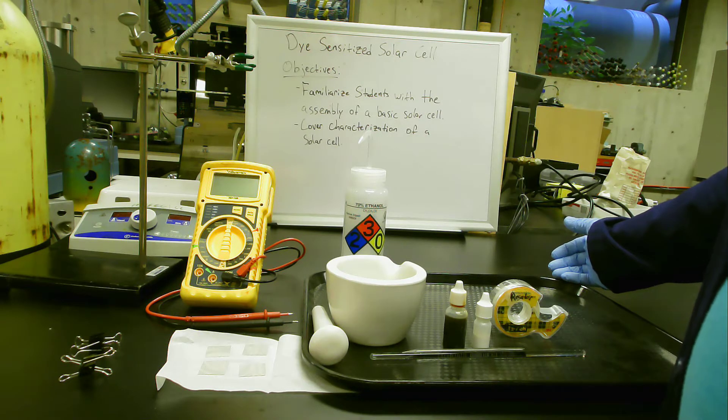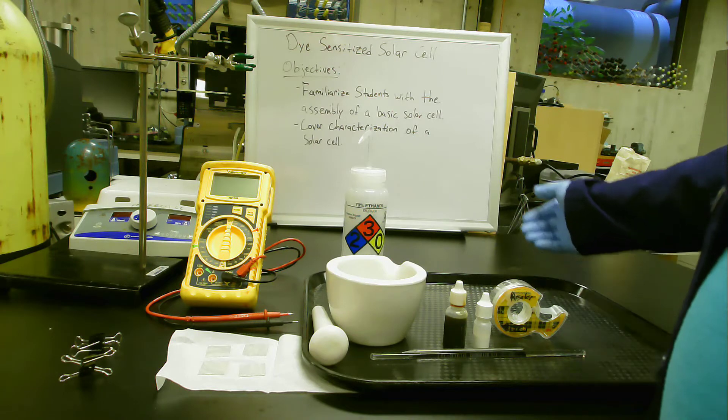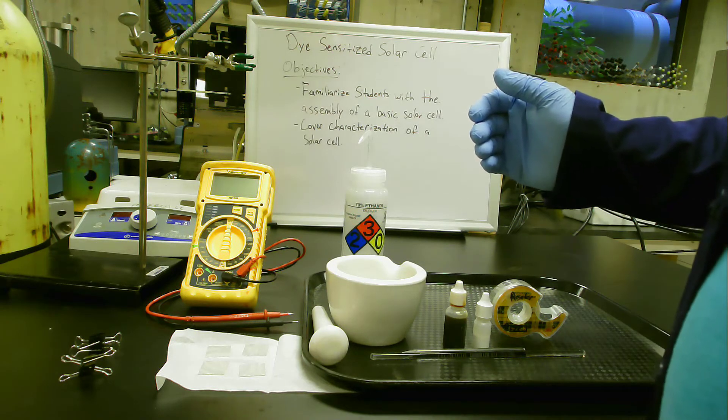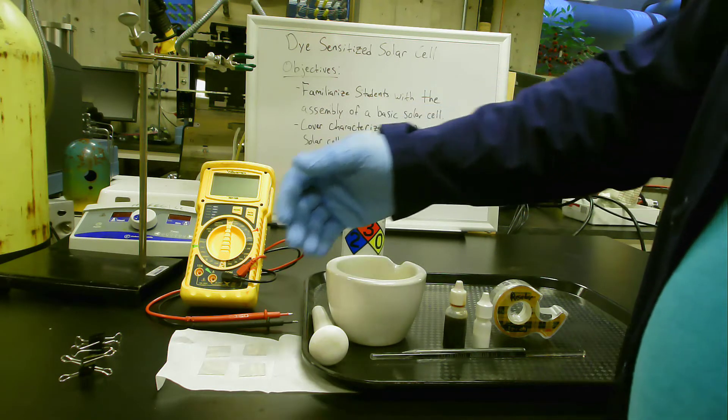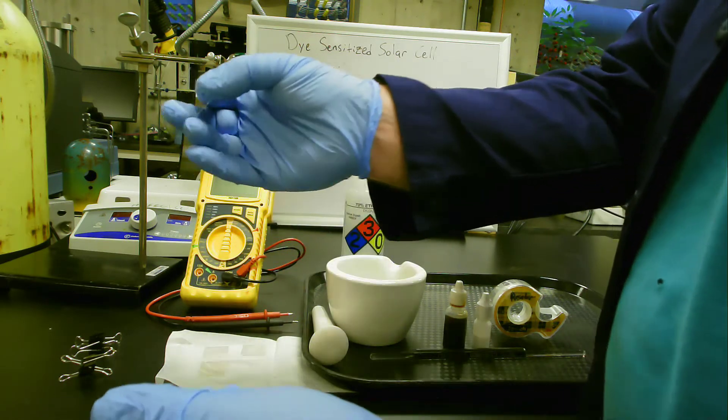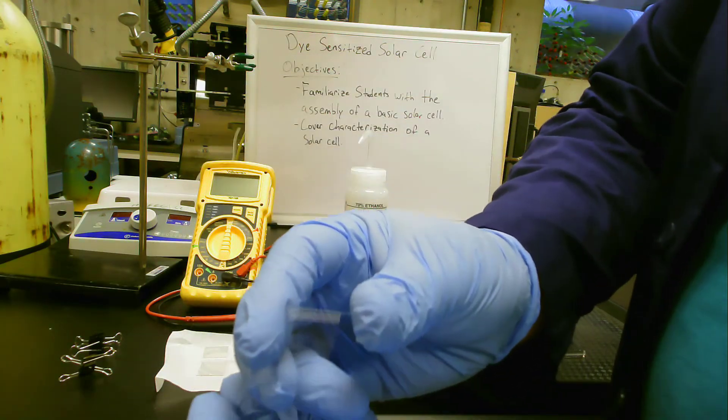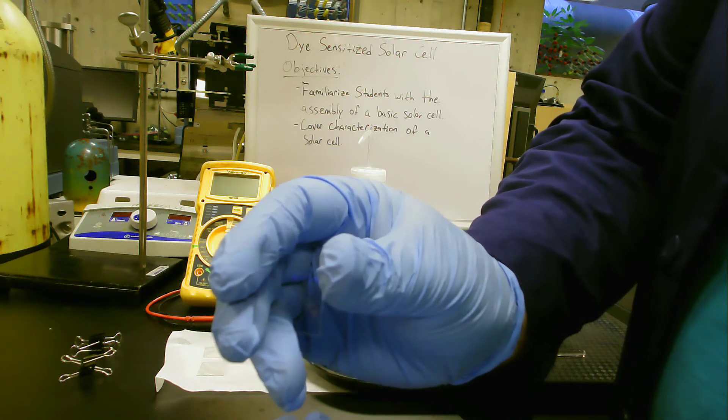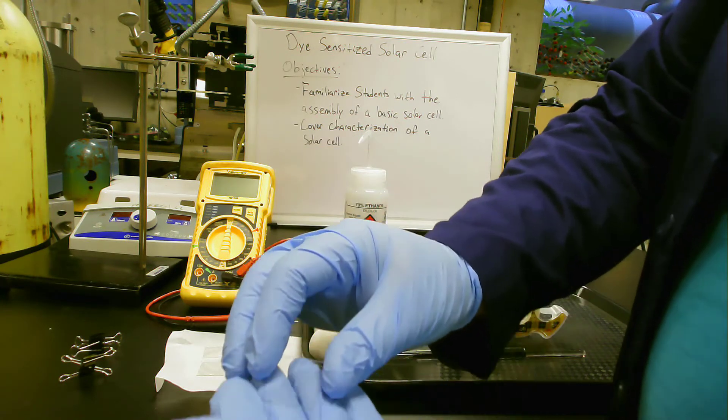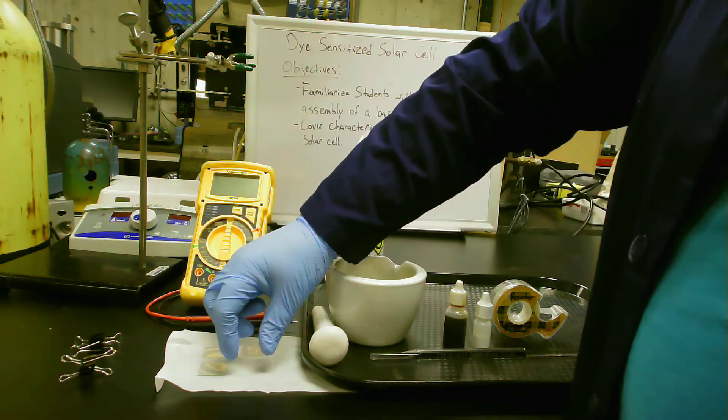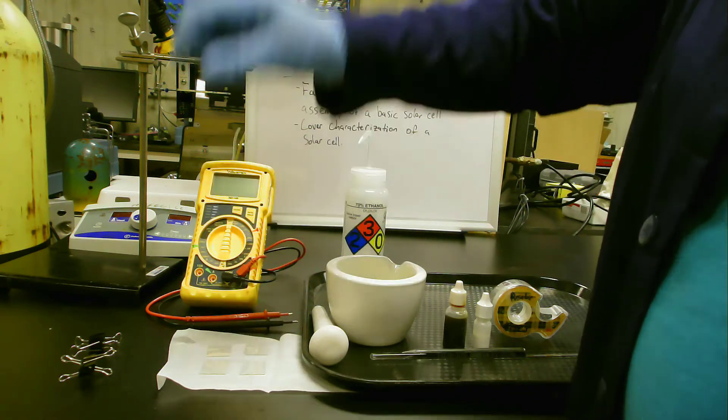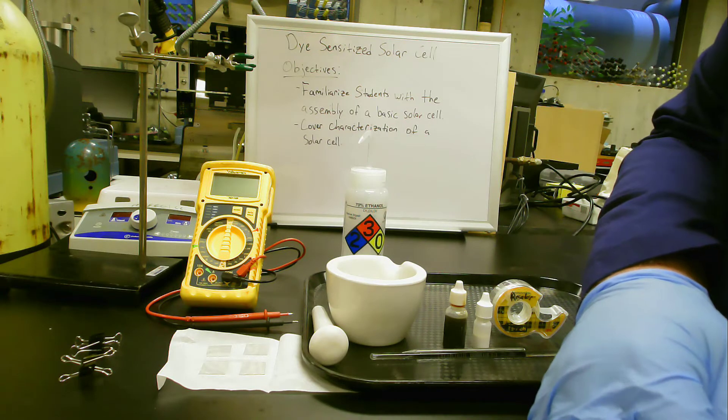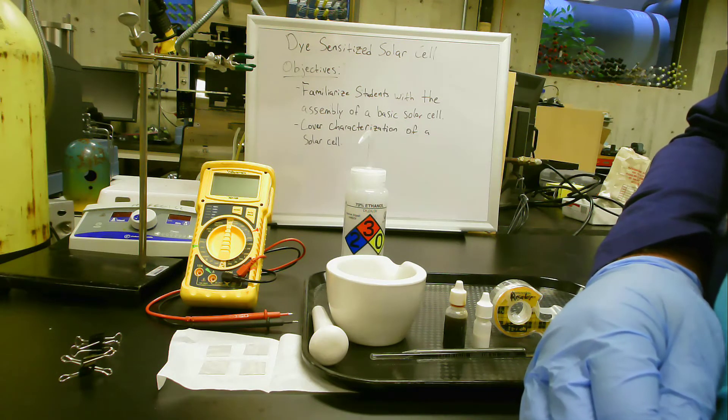As for our materials, the heart of our solar cell is going to be the ITO coated glass. This is glass that's coated with an electrically conductive layer. The important part is that this is transparent so that light can get through. Our solar cell needs to be able to receive light, so if we use a non-transparent material, that would make it a lot more difficult.